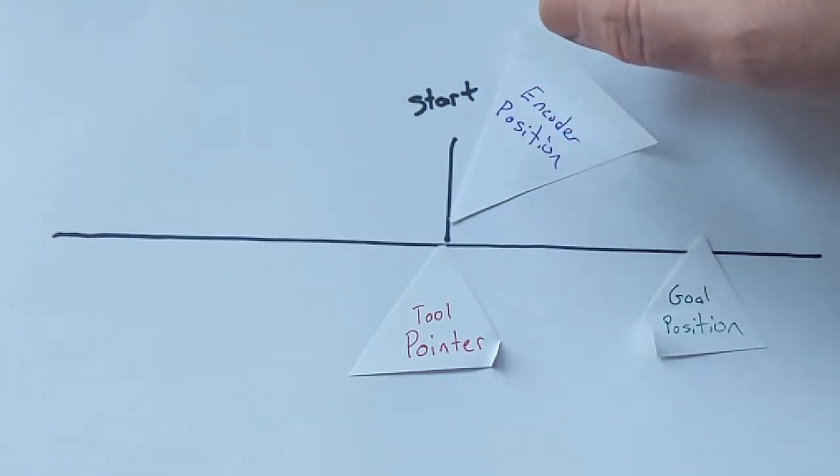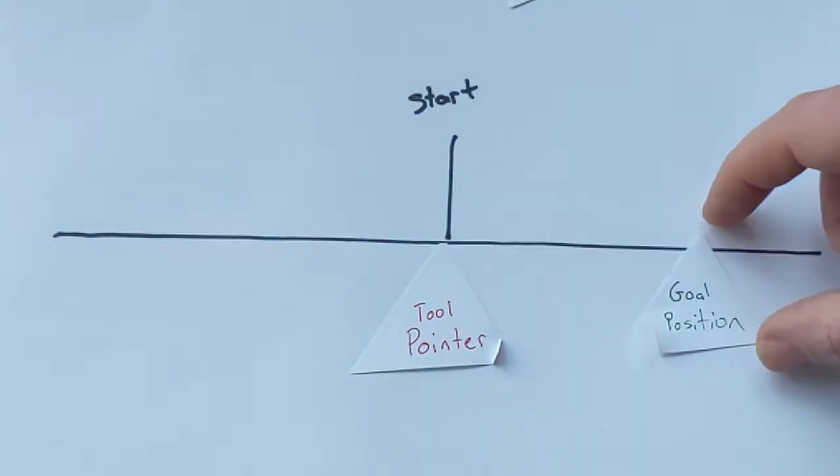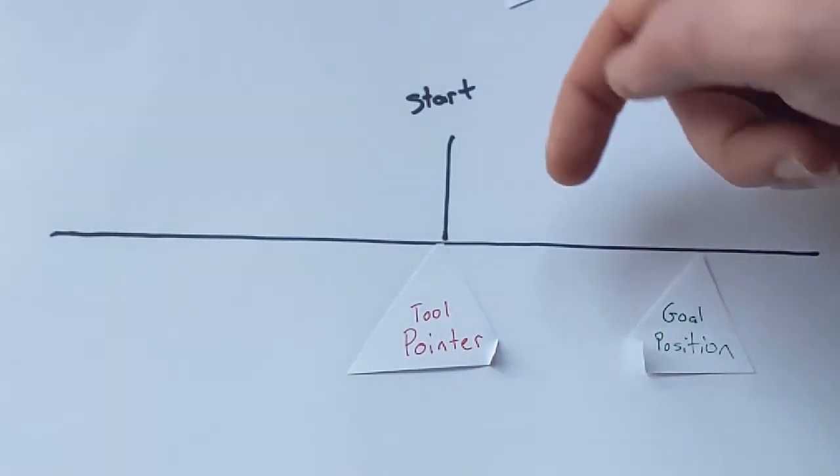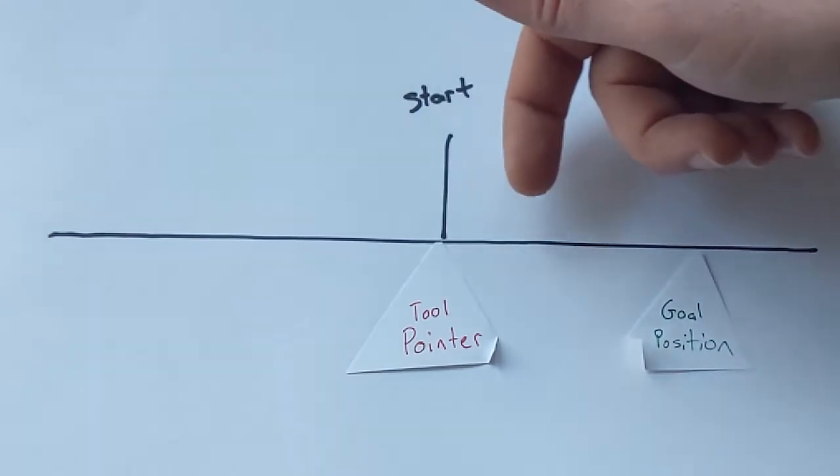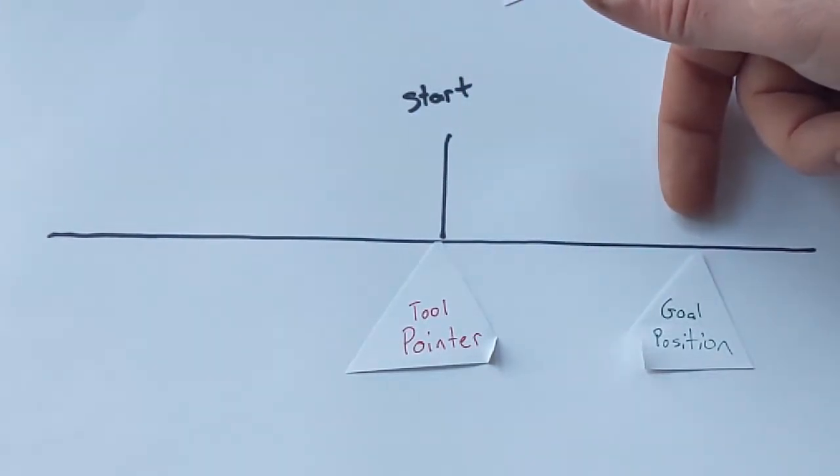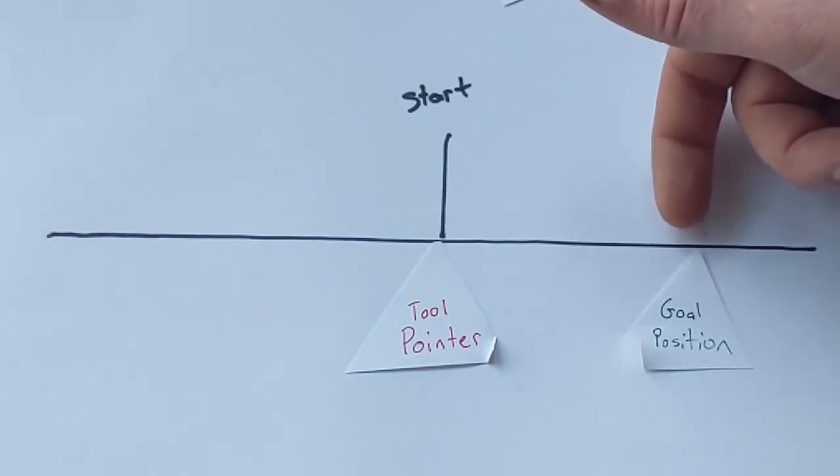And for normal CNC motion all you really need to do is know where the start is and know where the end is and then you just figure out how many steps you need to do to get there. You need to figure out the direction to get there, you set the direction and then you step until you've stepped the number of steps that you've calculated. Pretty simple.